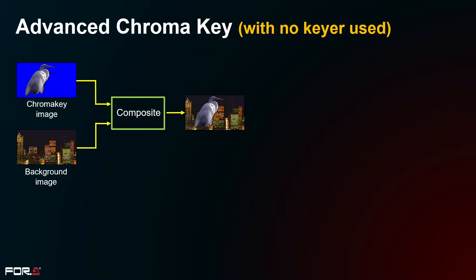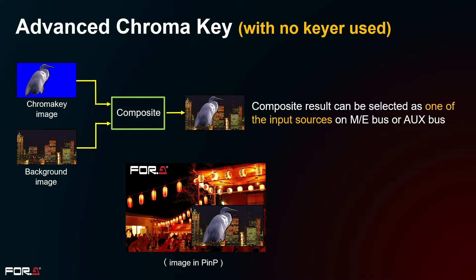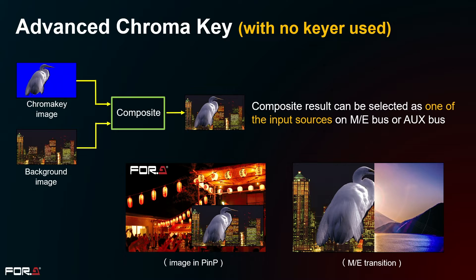Chroma keyed video and background video can be composited without the use of a keyer. The composite result can be selected as one of the input sources on the M/E bus or auxiliary bus, so it can be included in a picture-in-picture or switched in a transition.